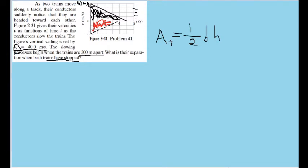From this, we can figure out that the bottom train — or at least the train graphed by the bottom half of the graph — starts three notches below zero, meaning it starts at 30 meters per second. So one train starts at 40 meters per second, and another train starts at negative 30 meters per second, meaning this train starts off traveling left.